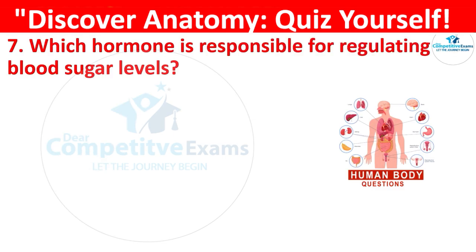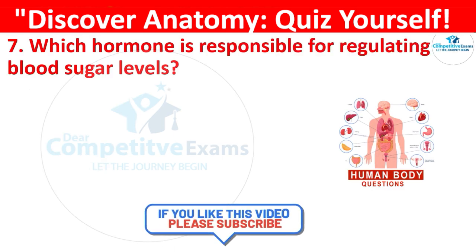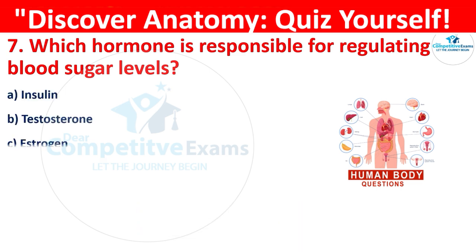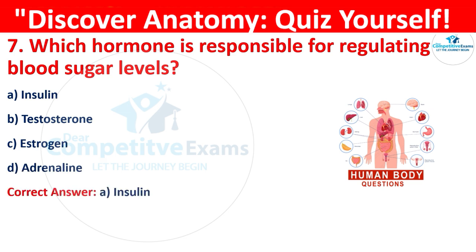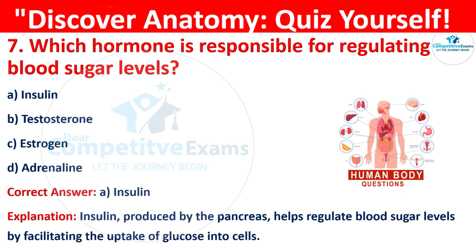Question 7: Which hormone is responsible for regulating blood sugar levels? The options are: insulin, testosterone, estrogen, or adrenaline. The correct answer is A, that is insulin. Insulin, produced by the pancreas, helps to regulate blood sugar levels by facilitating the uptake of glucose into the cells.